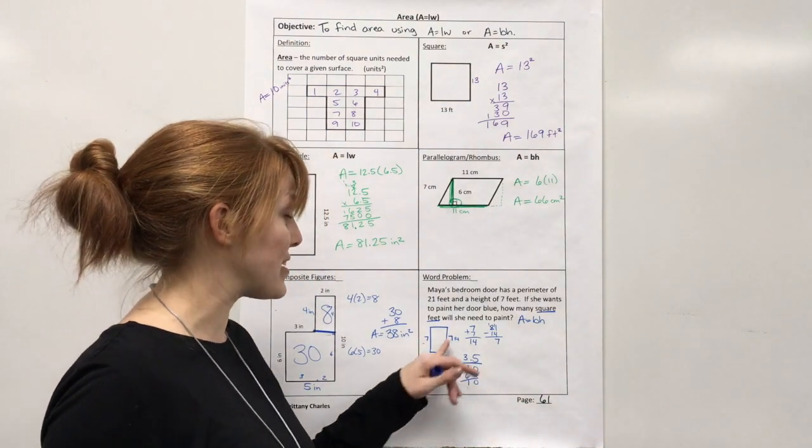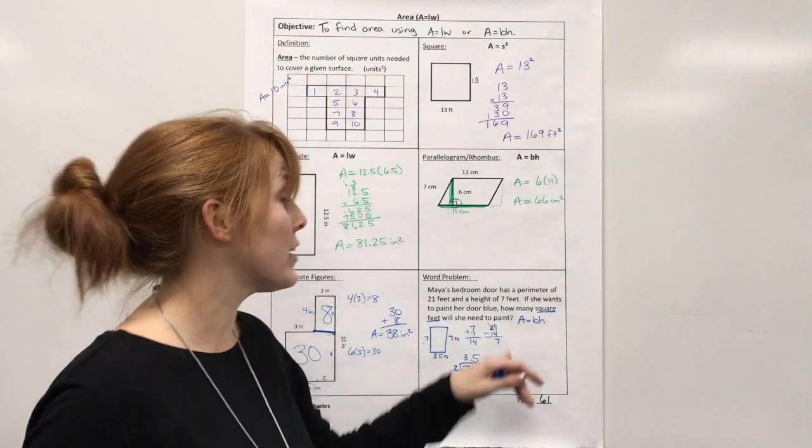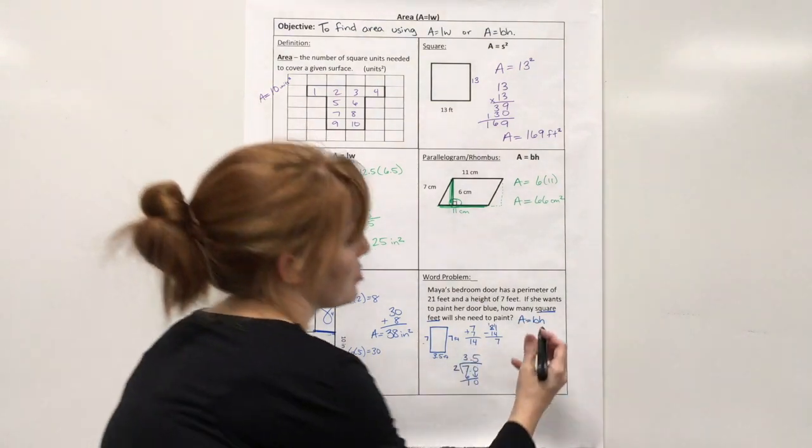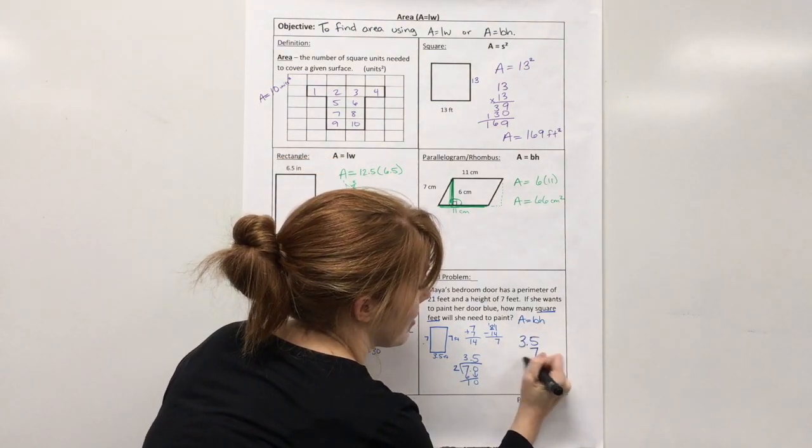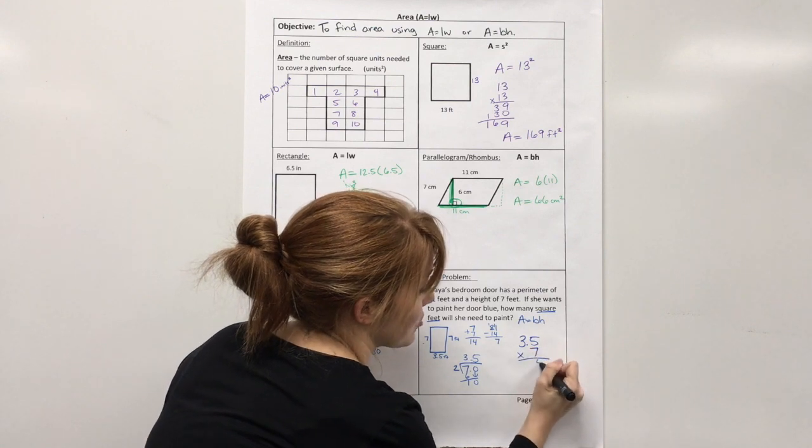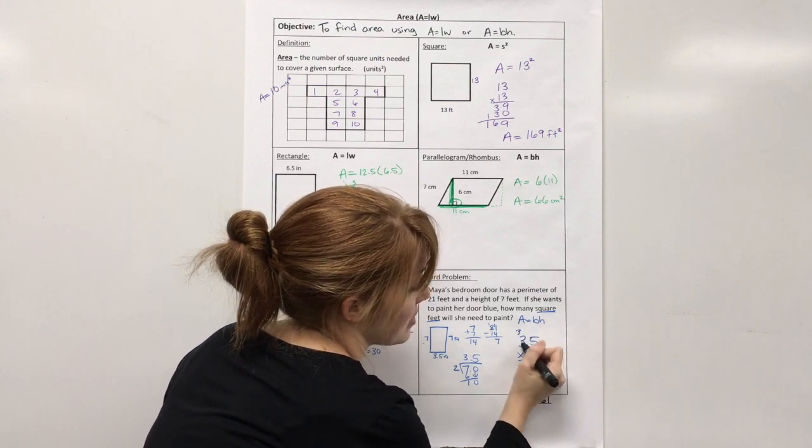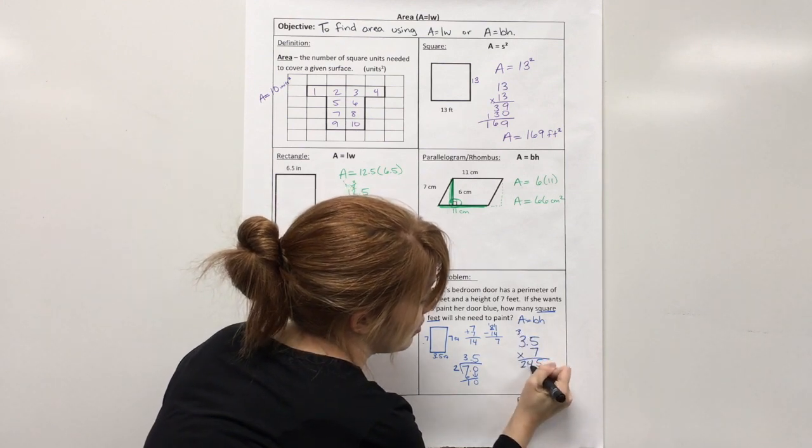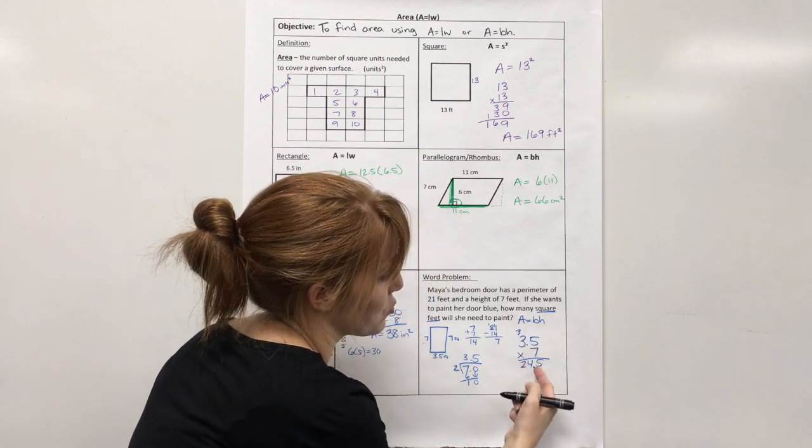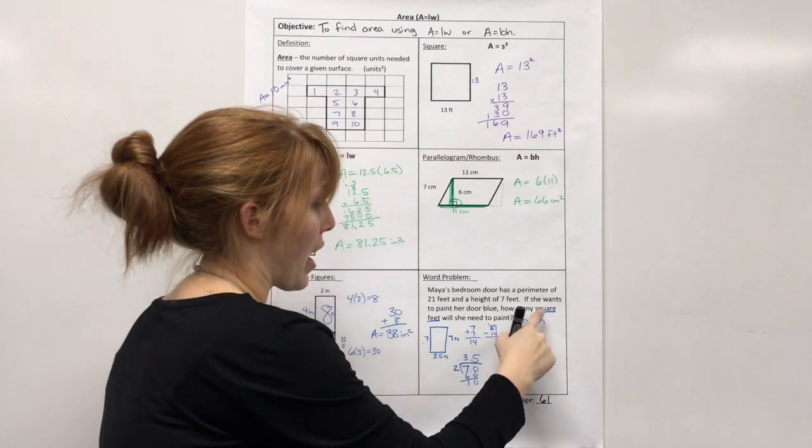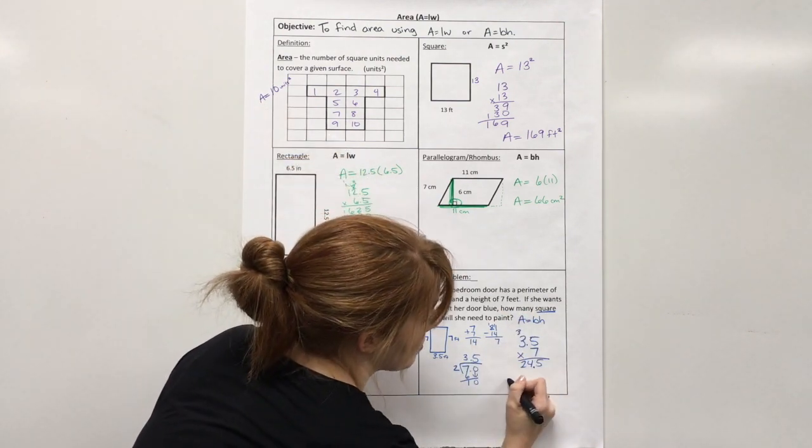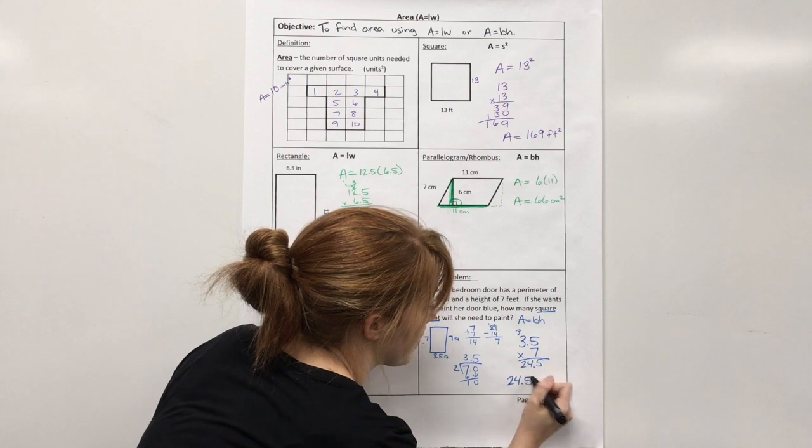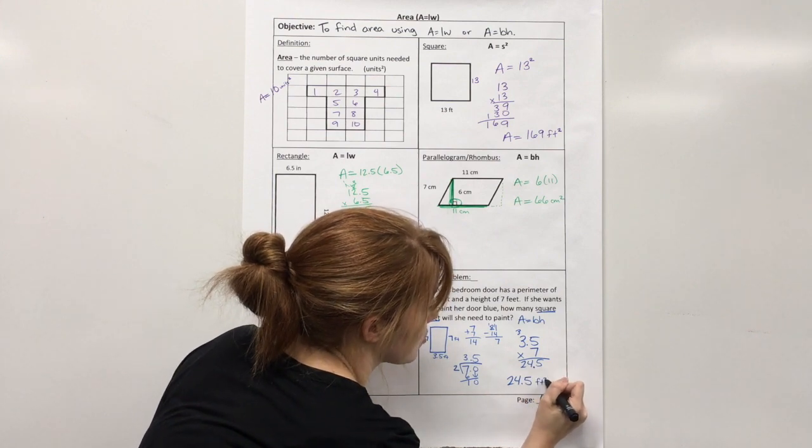Alright. So, now that I have the base and the height, I can actually find area. And I need to multiply. So, 3.5 times 7. That's 35. 7 times 3 is 21. 22, 23, 24. And I put my decimal. There's one spot. So, one spot. So, how many square feet? She would need to paint 24 and a half or 24.5 feet squared.